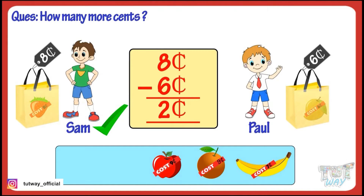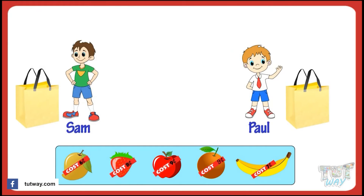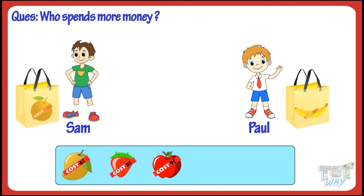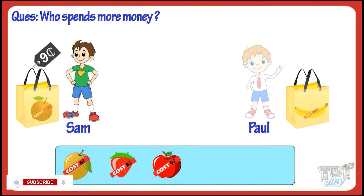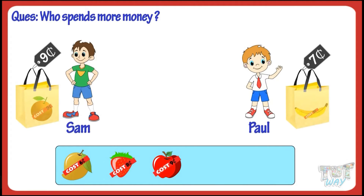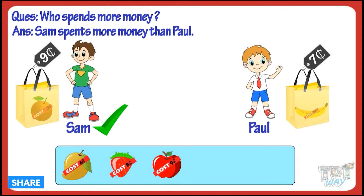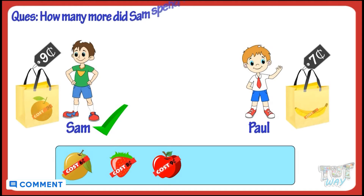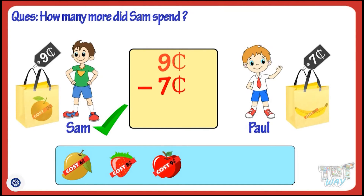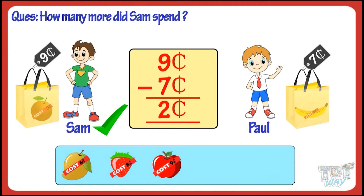Let's take another example. If Sam buys an orange and Paul buys a banana, who spends more? Sam spent nine cents and Paul spent seven cents. So Sam spent more. But how many more does Sam spend? Let's find it out. Subtract the smaller amount from the bigger amount to get the difference. Nine cents minus seven cents, we get two cents. So Sam spent two more cents than Paul.